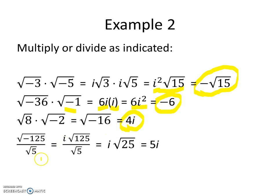On the next problem, we have the square root of negative 125. We pull the negative out and have i times the square root of 125, all divided by the square root of 5. The square root of 125 divided by the square root of 5 is simply the square root of 25. The square root of 25 is 5, so 5 times i leaves us an answer of 5i.